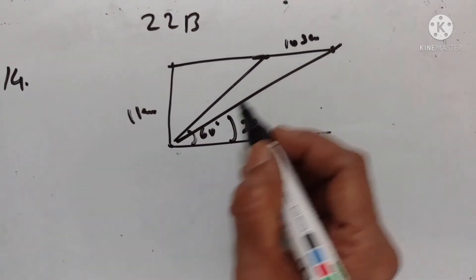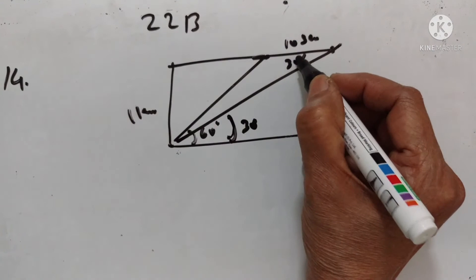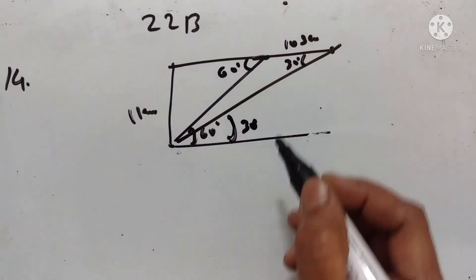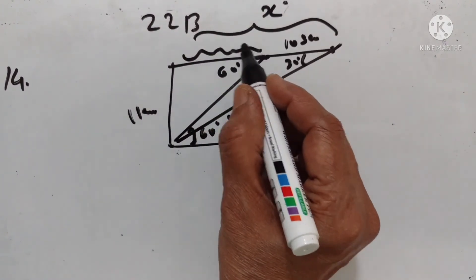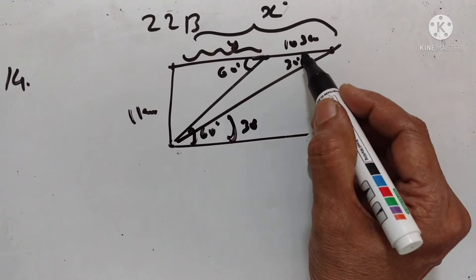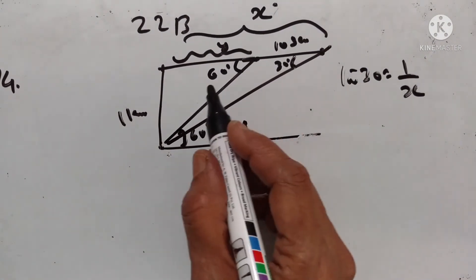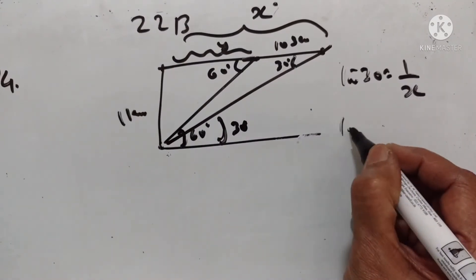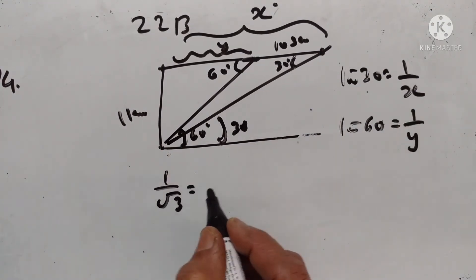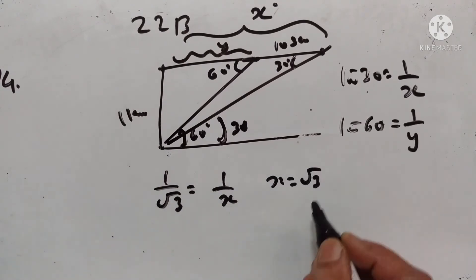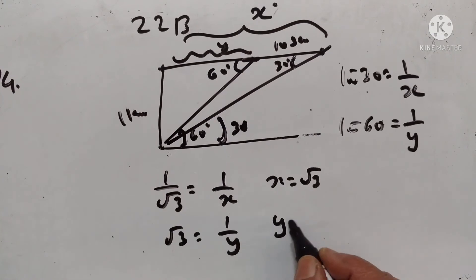This is 10 seconds and this is 1 km. This angle is 30 degrees, which means this is also 30 degrees, and this is 60 degrees. Let this distance be x and this distance be y. So tan 30 is equal to 1 upon x, giving x is equal to square root of 3. And tan 60 is equal to 1 upon y, giving y is equal to 1 upon square root of 3.